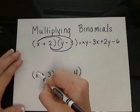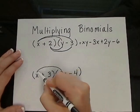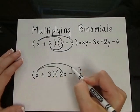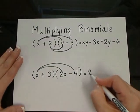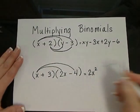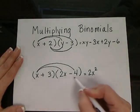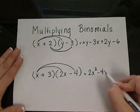Again, we're going to be distributing each term from the first parentheses to the second parentheses. So x times 2x would give me 2x squared, and x times minus 4 would give me negative 4x.